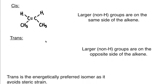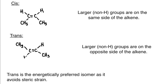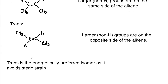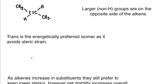The trans stereochemistry, on the other hand, is where the larger non-hydrogen groups are on the opposite side of the alkene. So where that first hydrogen was in the upper left corner, we put a methyl there, draw the pi bond, and then have the other methyl on the opposite side or facing the opposite face of the double bond. Trans is going to be the energetically preferred isomer because it avoids the steric strain present in the cis arrangement.